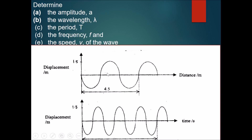The amplitude is the distance from the zero line to the peak or to the trough. We can see the peak is at 1.5, the zero line is at zero, and the trough is at minus 1.5. Therefore the amplitude is 1.5 meters.